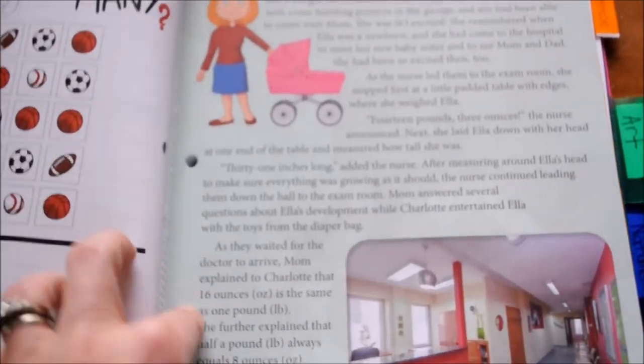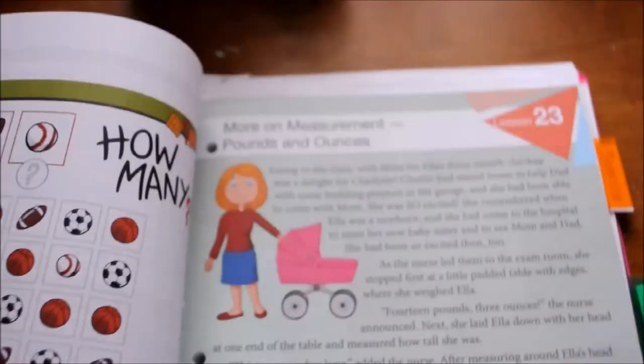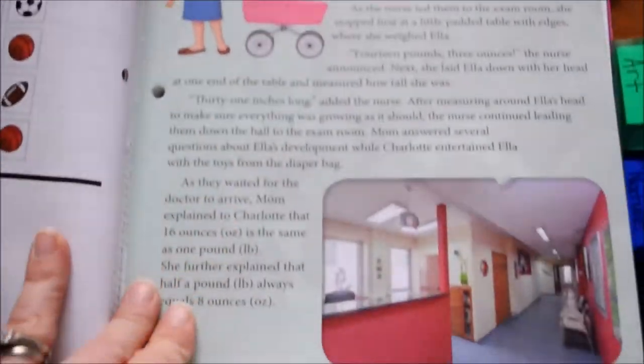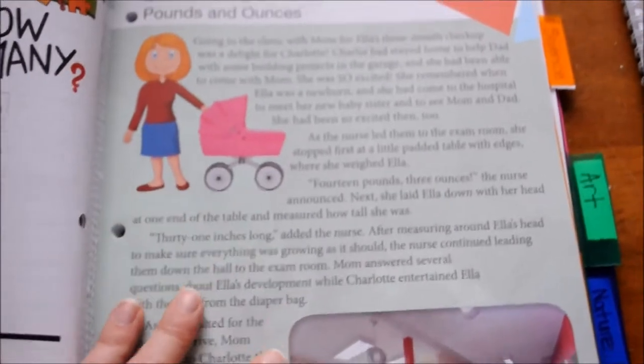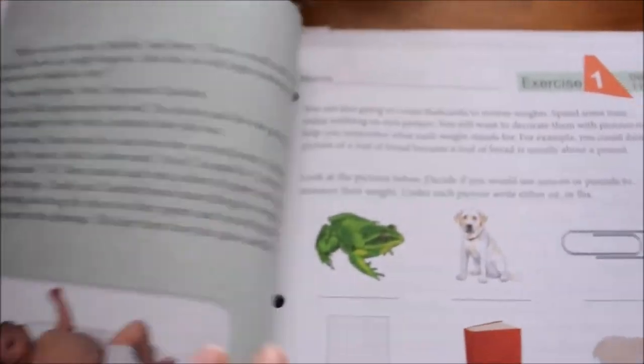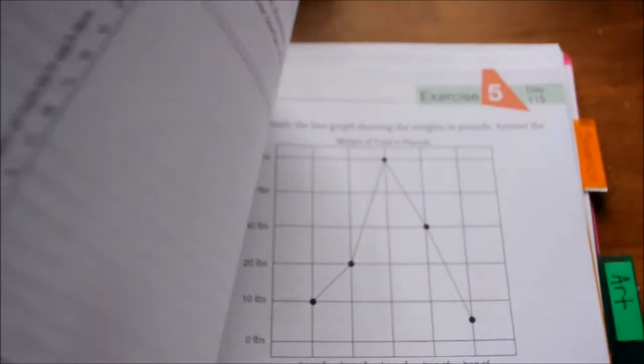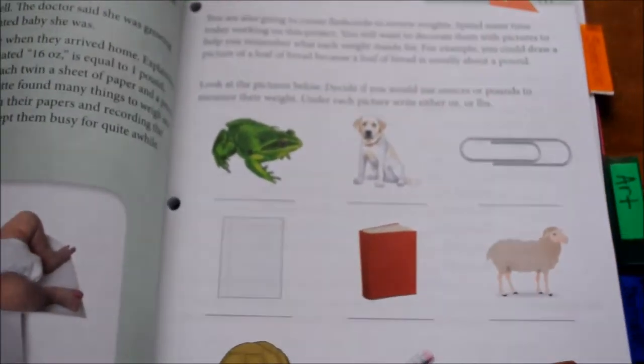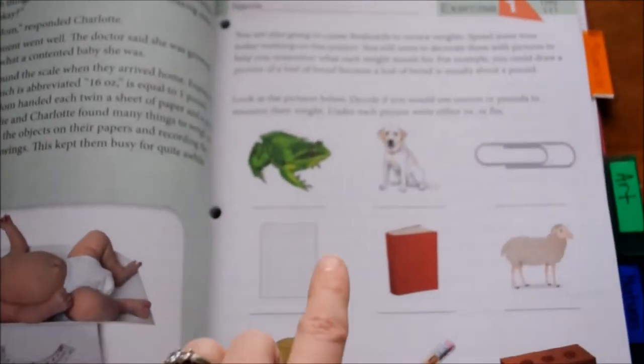So this one she picked out because she liked the story. It's a story at the beginning and then it does five days of exercises. What she likes about this, the main thing that she loves about using this curriculum, is that they're short.